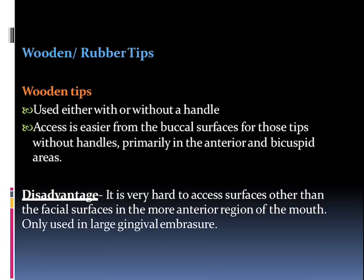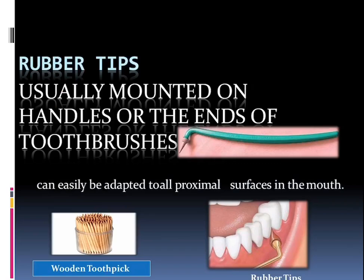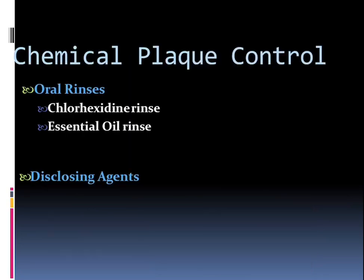Talking about wooden or rubber tips: these are used either with or without a handle. They access the buccal surface more easily, primarily in the anterior and bicuspid areas. The disadvantage is that it is very hard to access surfaces other than the facial surface in the more posterior region of the mouth. They are only used if large gingival embrasures are present. The rubber tips are usually mounted on handles or on the ends of toothbrushes and can be easily adapted on the proximal surface.